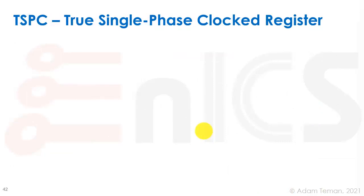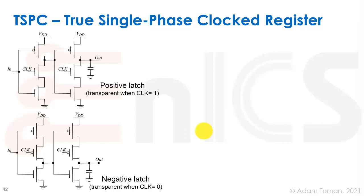C2MOS still requires a clock and a clock bar — two phases inside the flip-flop — and that is where TSPC, or True Single Phase Clock register, comes into play. This was a pretty cool invention that allows us to use just one single clock edge. We only use one clock; we don't need the clock bar.